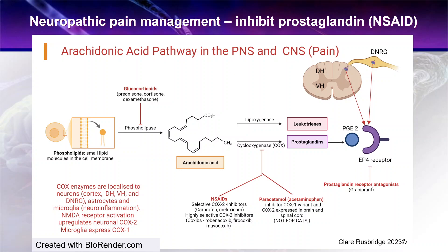Why might we want to consider these drugs? Many people wouldn't think of using a non-steroidal anti-inflammatory drug for something affecting the nervous system, because they associate these drugs with reducing inflammation, and they are licensed for conditions with inflammation such as osteoarthritis. However, we do have inflammatory pathways in the nervous system, and neuroinflammation is a very important process in many CNS pathologies, including neuropathic pain. Enzymes associated with production of prostaglandin, specifically the COX enzymes, are localized throughout the nervous system.